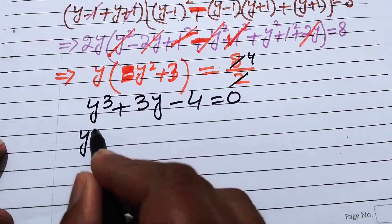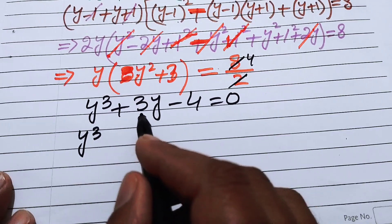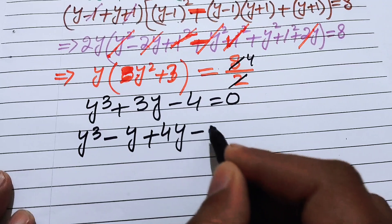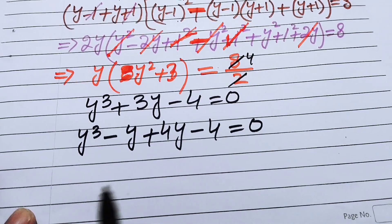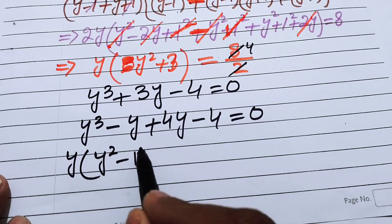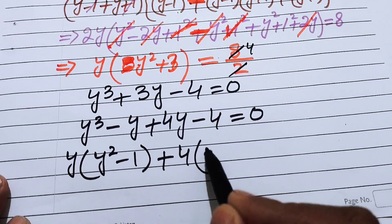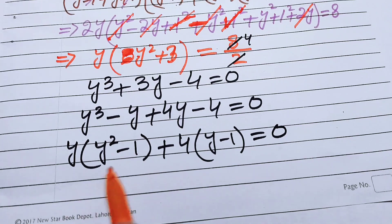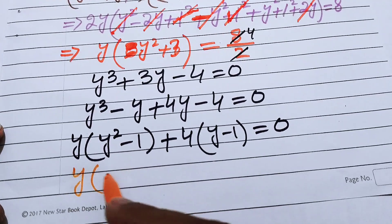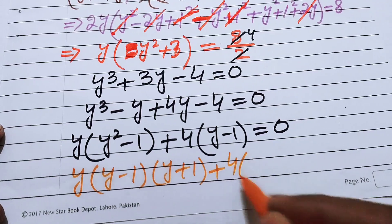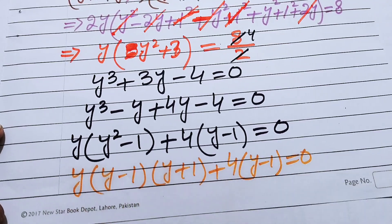We now factor y³+3y−4 = 0. We rewrite 3y as −y+4y, giving y³−y+4y−4 = 0. Taking y common from the first two terms gives y(y²−1), and taking 4 common from the last two gives 4(y−1). This yields y(y−1)(y+1) + 4(y−1) = 0.